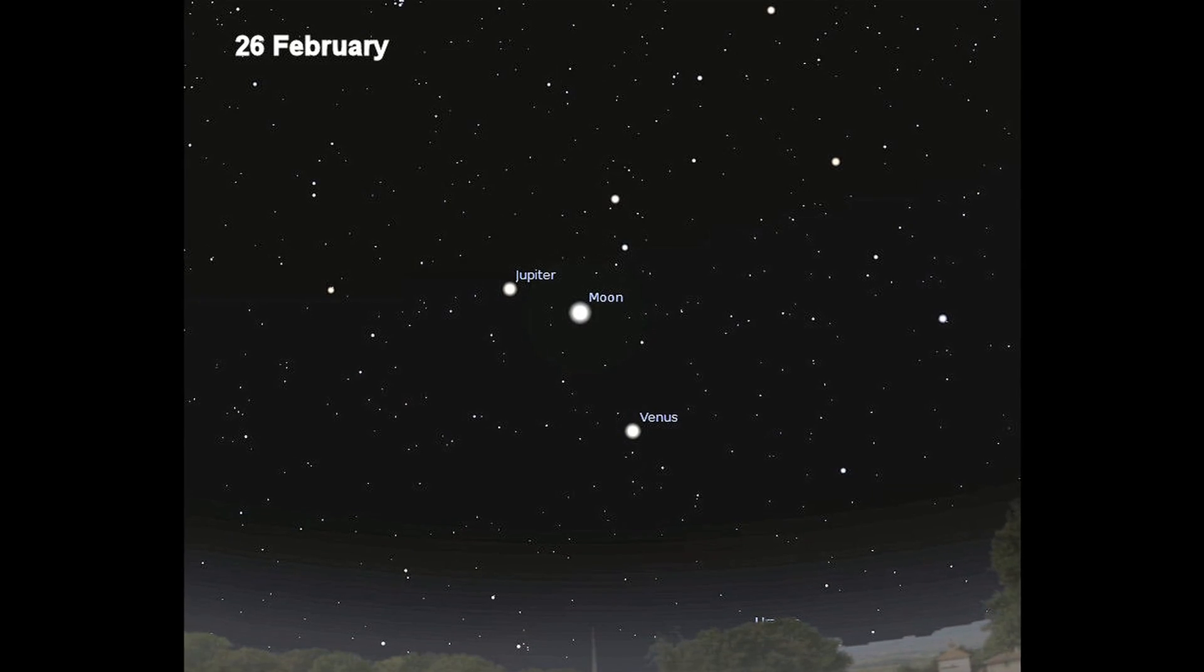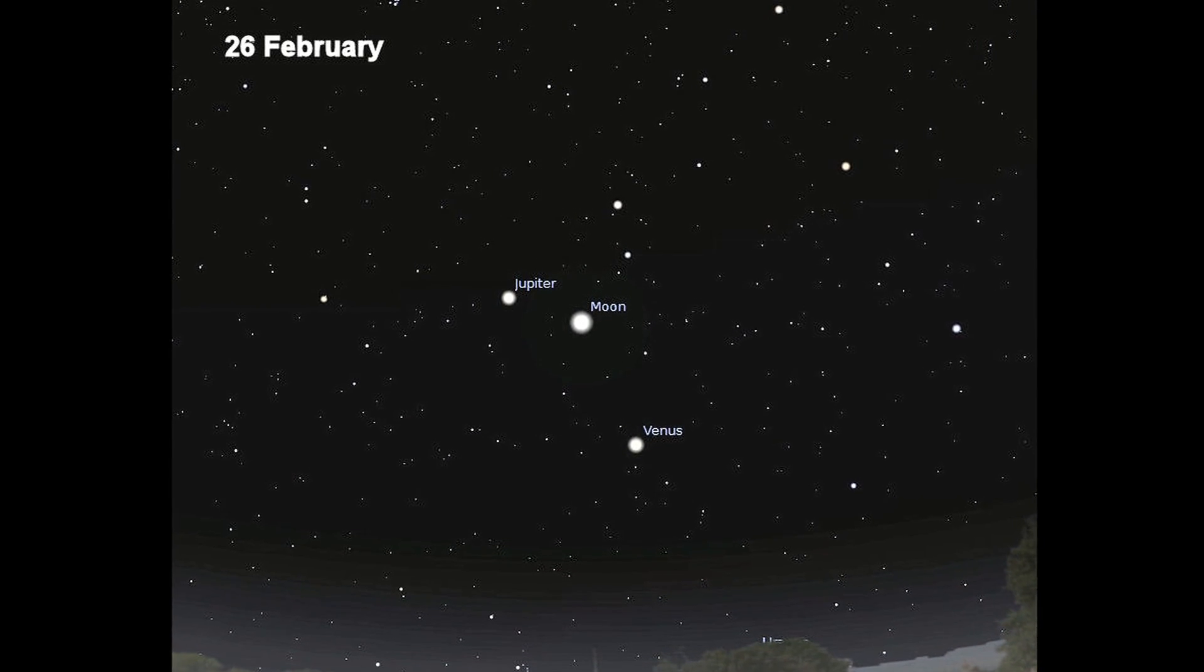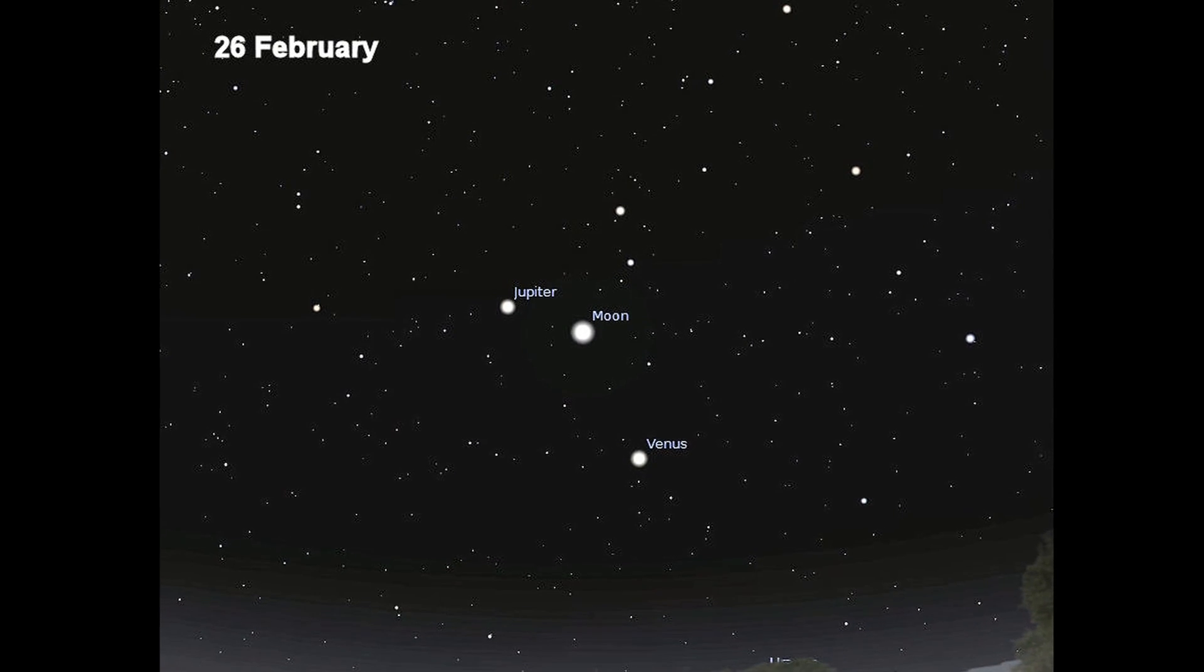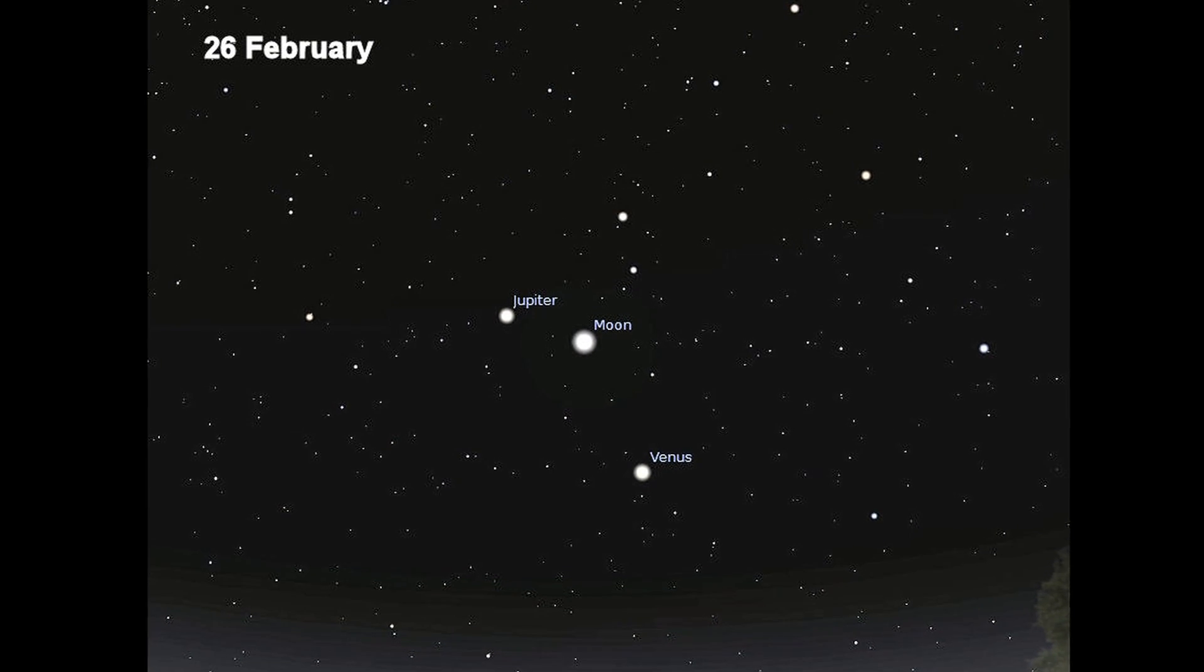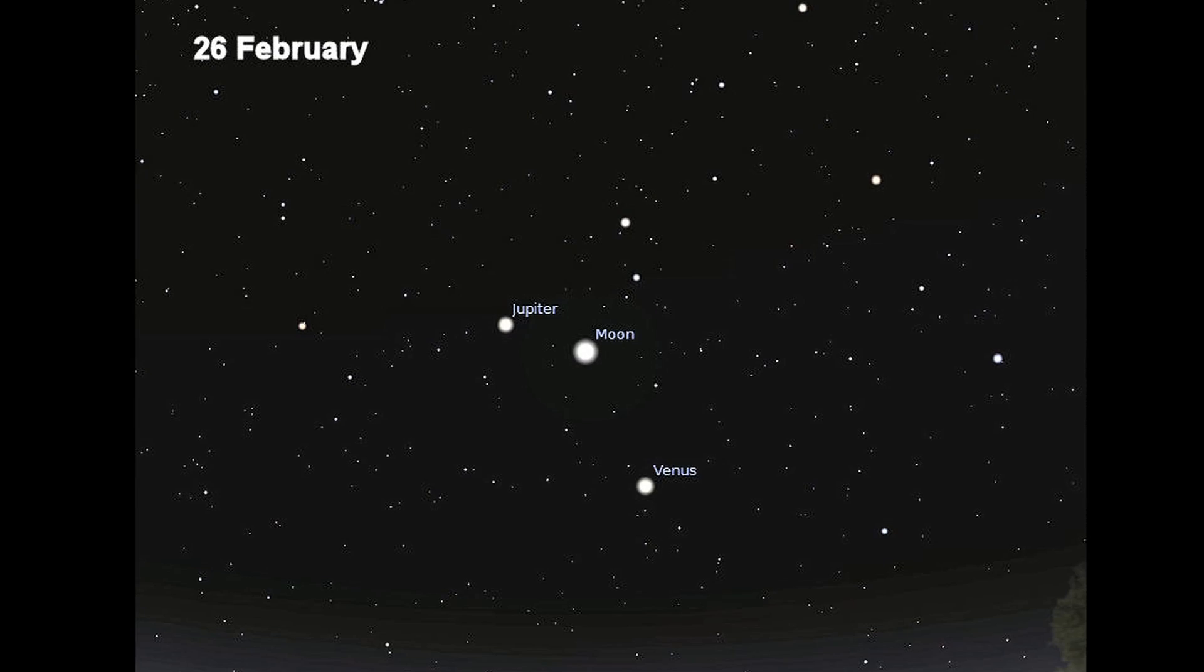There's one particular night which might be really good for anybody who just wants to take a photograph of this pairing of planets. Because on the 26th of February, just after sunset, the crescent moon will join the planetary pair. And in fact, this beautiful crescent moon will lie between the two planets.